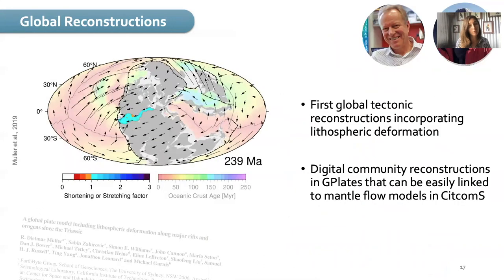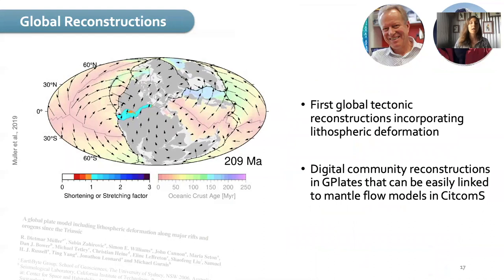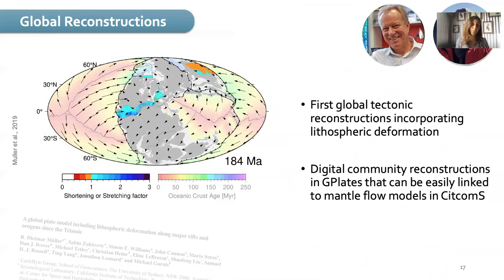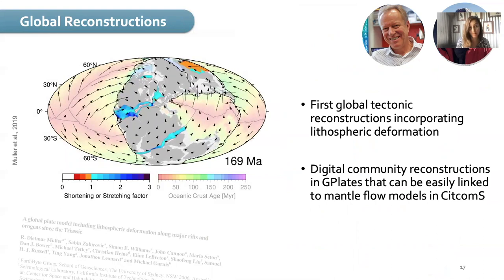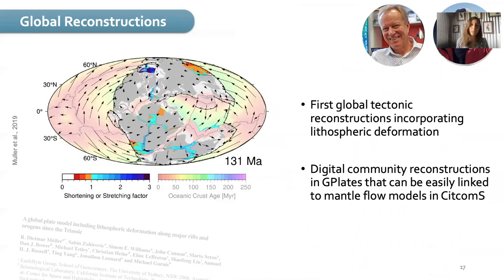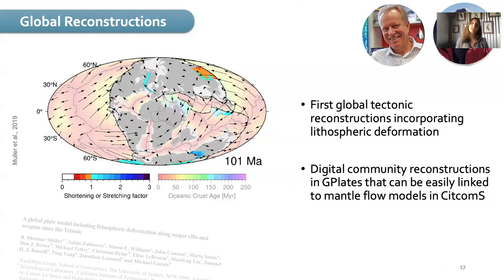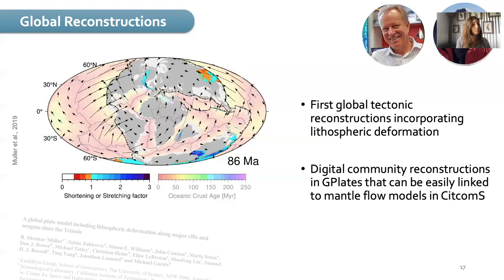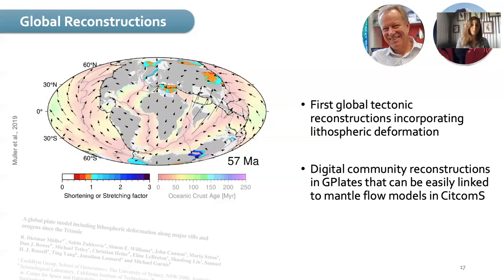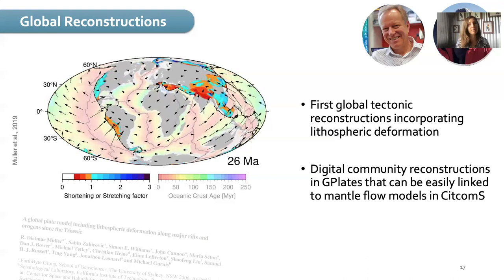In terms of global reconstruction, one of the main advances during these five years of BGH is the first global tectonic reconstruction incorporating lithospheric deformation, published by DeepMod in 2019. This work is constantly refined by people like Sabine and others in the group. It opened the way to new models because we can now couple plate tectonics with landscape evolution models, deriving lithospheric deformation and converting that into elevation in our landscape evolution model.